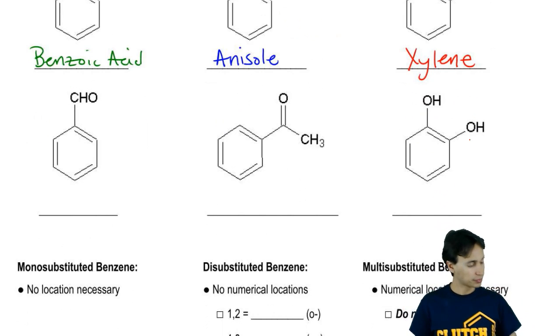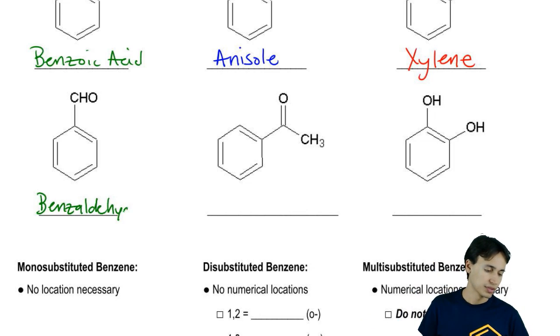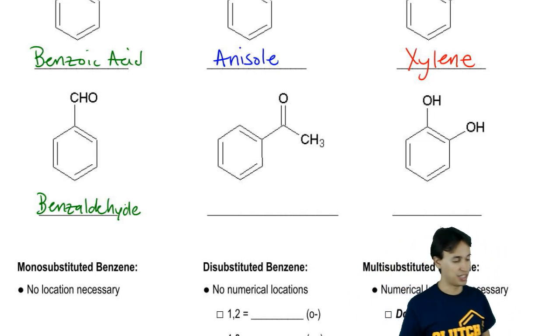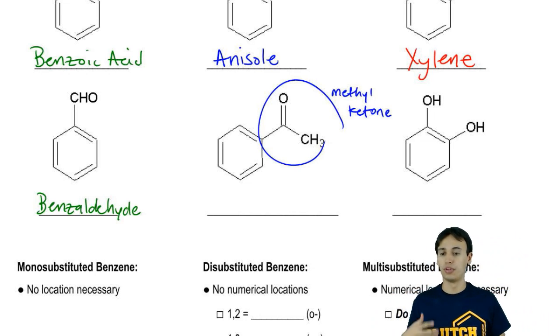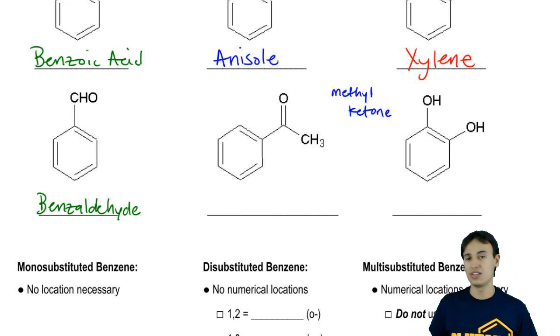What else? Well, if you have an aldehyde on your benzene, that's going to be called benzaldehyde. That one makes sense. It's kind of like carboxylic acid is benzoic acid. A benzene aldehyde is benzaldehyde. That one was pretty easy. What if you have the most basic ketone, a methyl ketone? Methyl ketone on a benzene ring is actually a weird name. It's acetophenone.